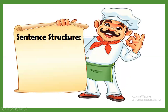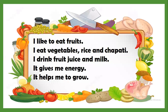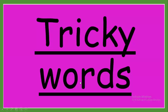Now let's revise the sentence structure about my food. I like to eat fruits. I eat vegetables, rice, and chapati. I drink fruit juice and milk. It gives me energy. It helps me to grow.